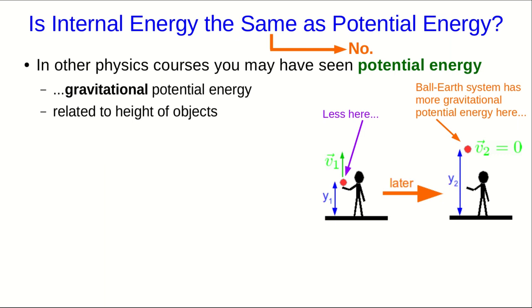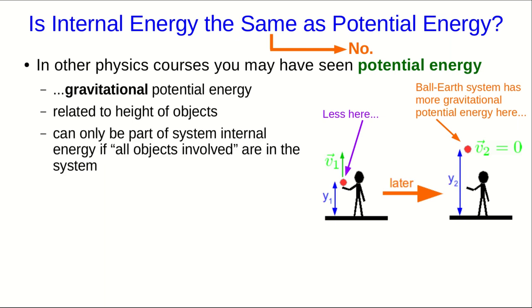But note, I had to say ball-Earth system. I can only include this as internal energy for the system if all the objects involved are in the system. And we're talking about an interaction between the ball and the earth. So this potential energy is part of the internal energy if the system includes both the ball and the earth.